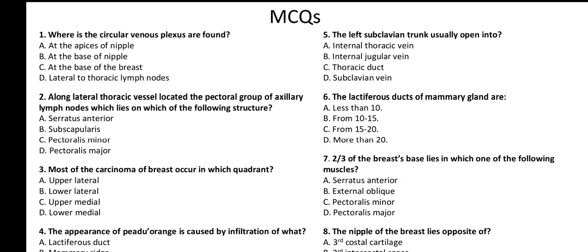Question one: Where is the circular venous plexus found? A) At the apex of the nipple, B) At the base of the nipple, C) At the base of the breast, D) At the lateral thoracic lymph node. We will answer all these questions before we go to the answers below.